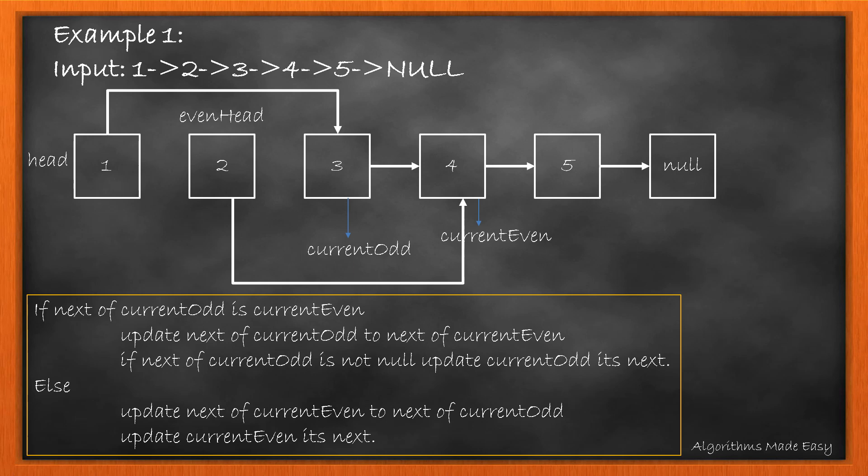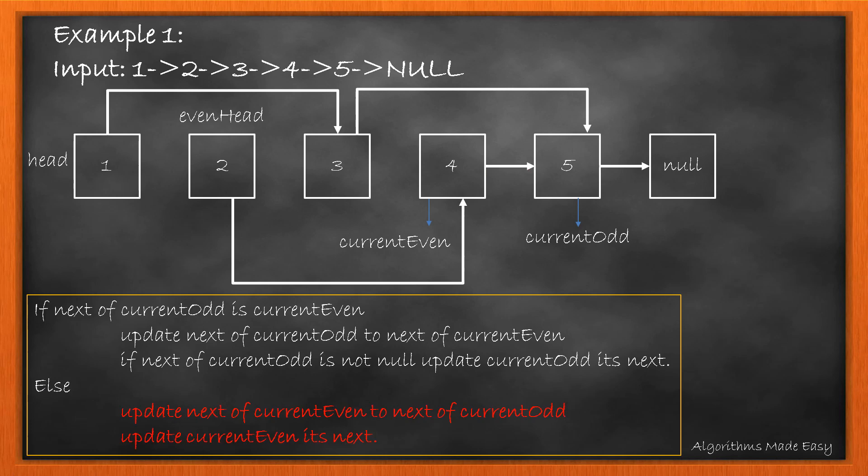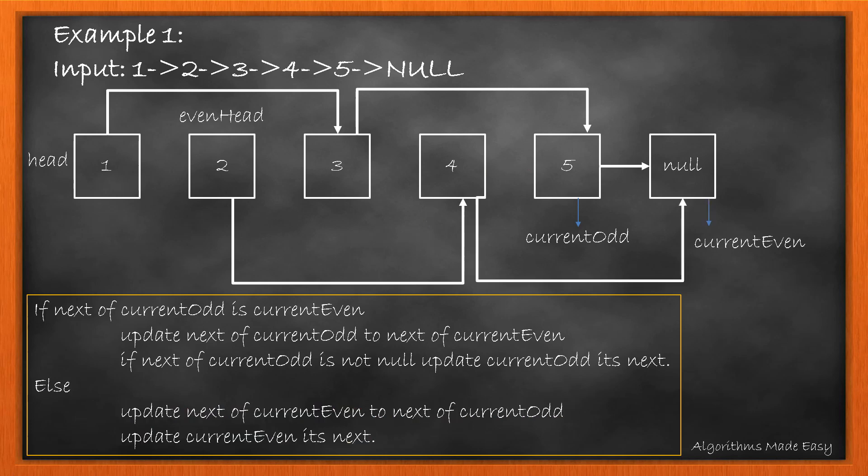Loop condition is still true, so we enter again. The if condition is satisfied, so we apply both operations. Now going in the loop again, the if condition is false, so we go to the else part and execute both statements. Now as currentEven becomes null, we terminate the loop.